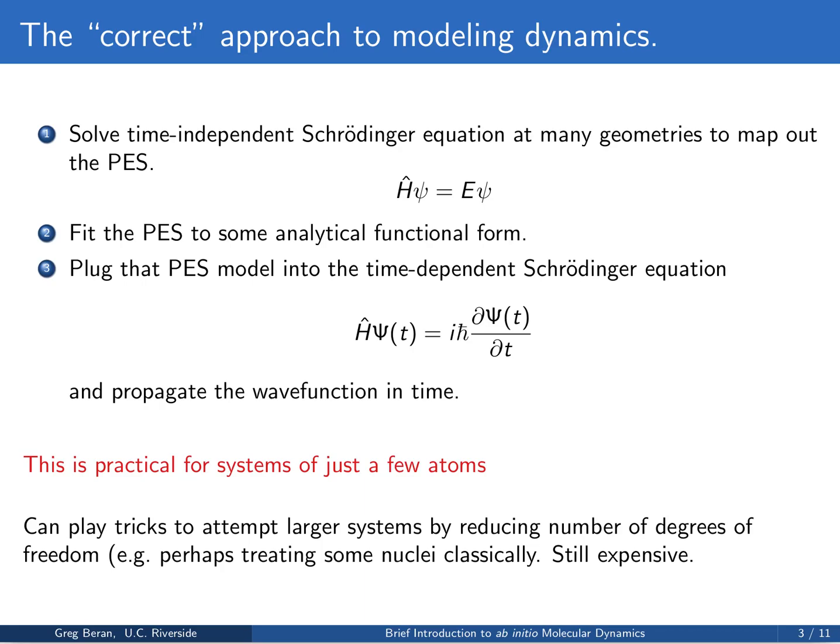Unfortunately, while this is the right way to do it, it's just not practical for systems of any size. You can really only do this fully for systems with a handful of atoms. You can play various tricks to try to do this in larger systems — for example, you might only treat a select number of degrees of freedom fully quantum mechanically and maybe treat some of the others classically — but it's still going to be expensive, so this isn't done very often.